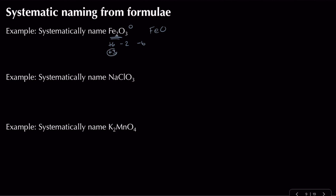The variable oxidation state atom here is iron, which is plus three. So I wouldn't just call this iron oxide — I would say iron(III) oxide. For FeO, by the same logic, that's iron(II) oxide. This shows the importance of using a systematic name.